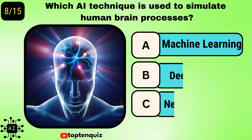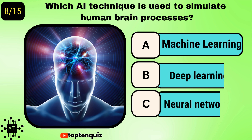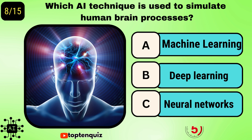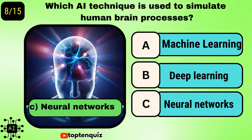Question number 8: Which AI technique is used to simulate human brain processing? The answer is neural networks.